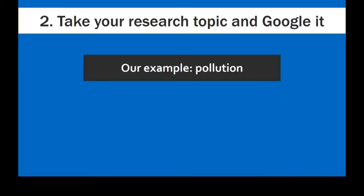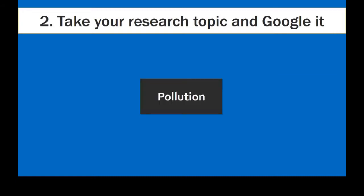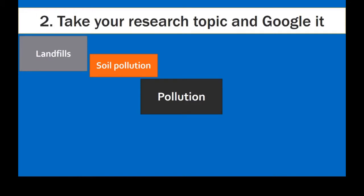To better demonstrate how to get started, we're going to be using the example of pollution. It's a very large, broad topic that has many branches we can write about. We'll start with what we know — perhaps types of pollution. What other types can you find in your Google search? So we have our broad topic, pollution, and we found out a bit on Google, such as soil pollution, which even leads us to find out about landfills as well. There are other ways that pollution can affect the soil, but we're going to stick with one example.